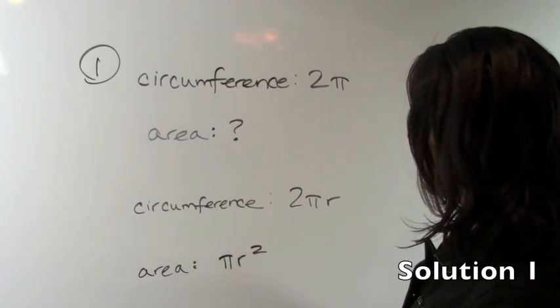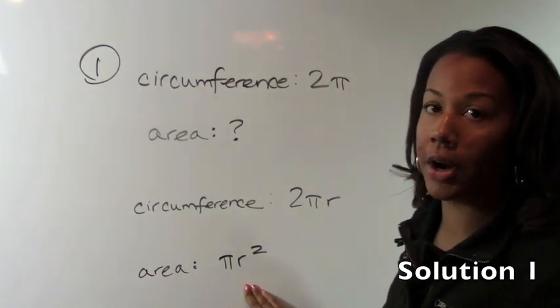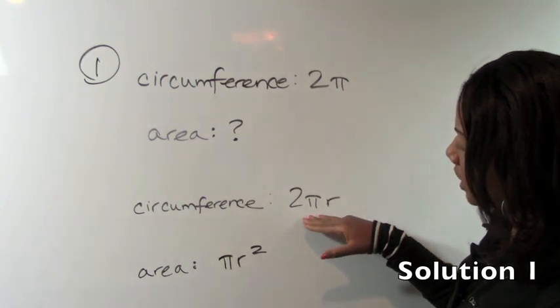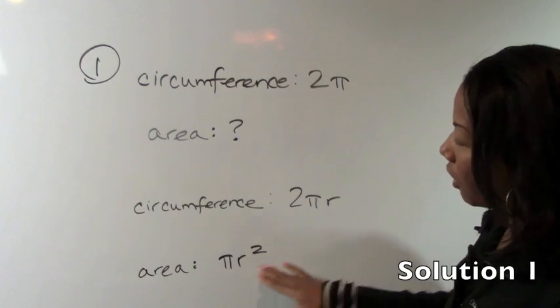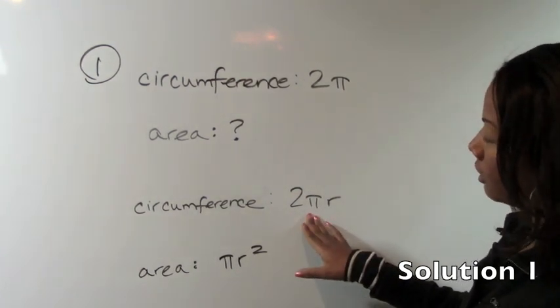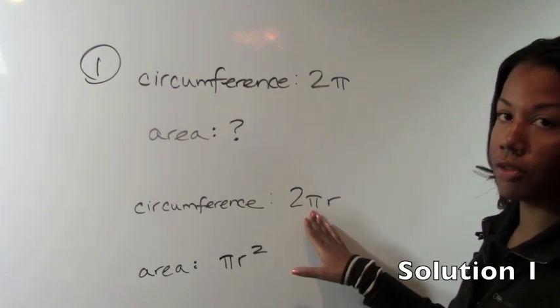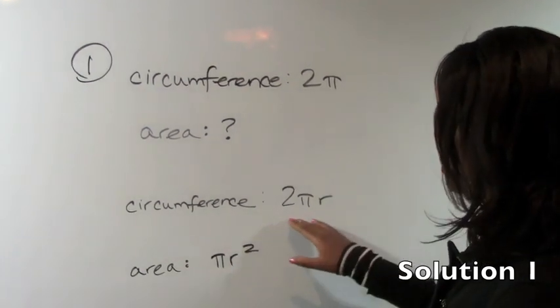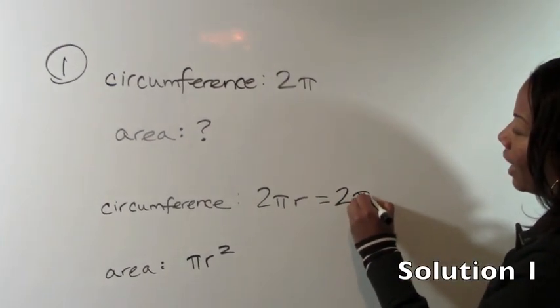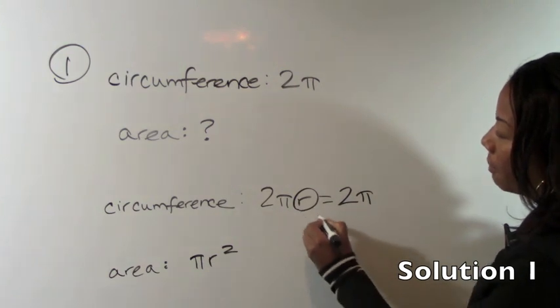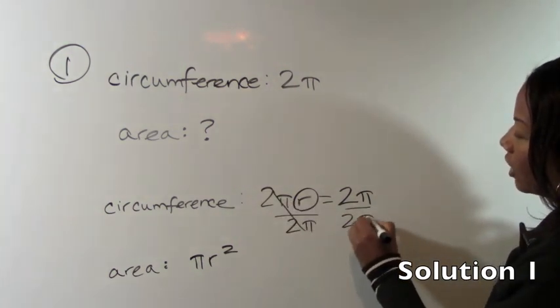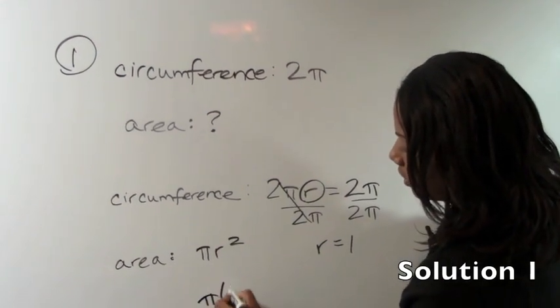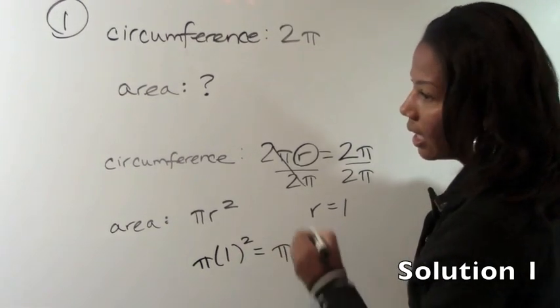So the circumference formula is 2πr and the area formula is πr². Make sure you have those two things memorized. What's shared between the circumference and the area is the variable r. We don't know what r is. Even though π also appears to be an unknown, we know that's a constant of 3.14. So we need to figure out what r is. Once we figure out what r is here, we can plug it into the area formula. So the circumference is 2πr and in this case the circumference is 2π. If we solve for r by dividing both sides by 2π, we find that r equals 1. And then all we need to do is plug that 1 in right here. So πr², in this case, is simply π and the answer is C.